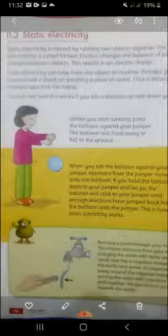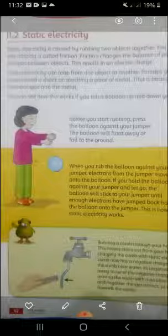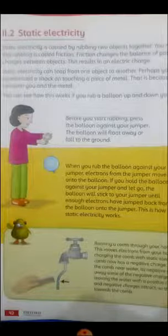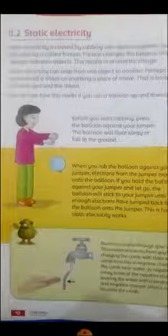Static energy can leap from one object to another object. When two objects are affected by friction, the positive and negative charges are disbalanced. And in the end, the electric charge produces its place. We call it static electricity.